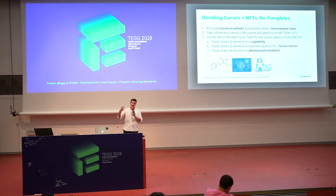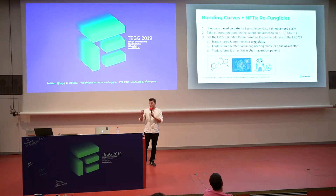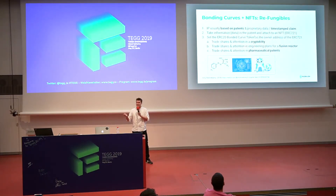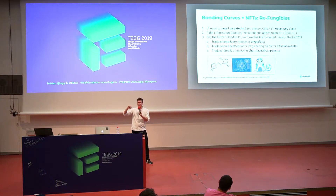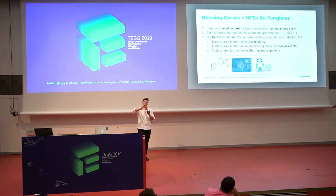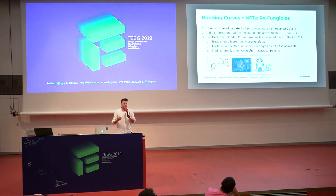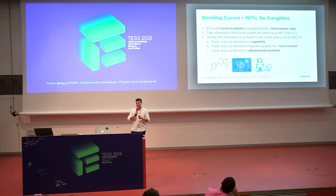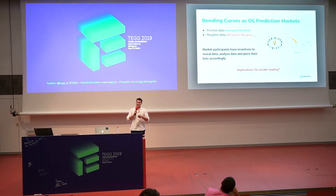In a token engineering sense, we now combine bonding curves with non-fungible tokens. Intellectual property in the most basic sense is based on patents and proprietary data as a timestamped claim. We attach that data to a non-fungible token and set the owner address of that NFT to a bonding curve — a concept first spearheaded by Billy Rennkamp in early 2018, called a 'refundable.' Now the bonding curve fully controls that intellectual property asset, though there are still legal implications to consider.